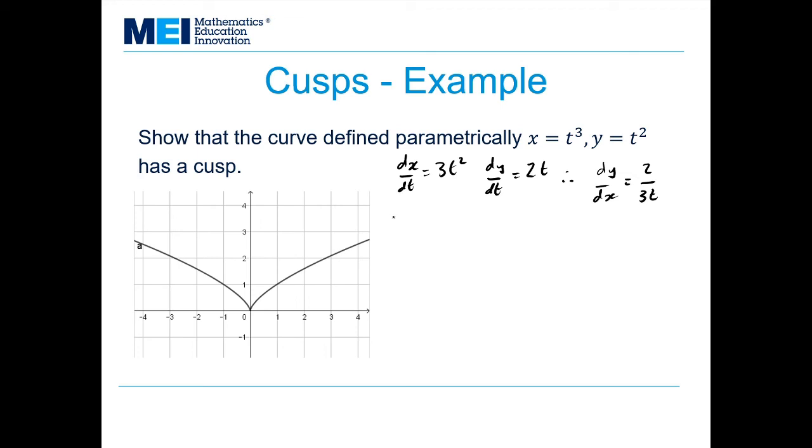Next we checked that zero, zero was in fact a point on the curve. So at t equals zero we had the x equals zero, y equals zero. So zero, zero is a point on the curve.